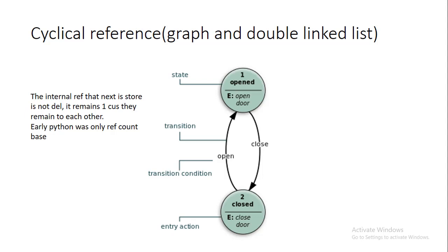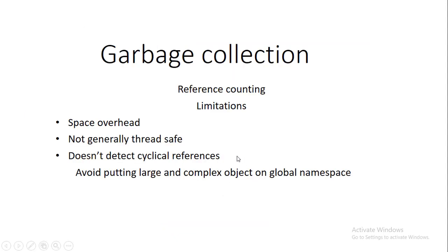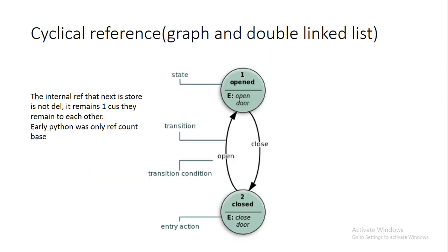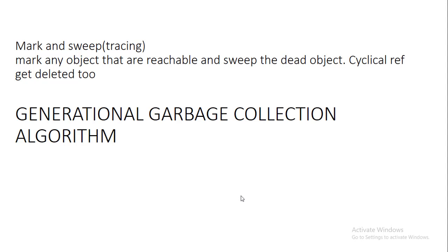Cyclical references occur when the internal references of objects are linked to each other on both sides — like two linked nodes pointing to each other. The reference count of each node will be one, so the reference counting algorithm will not delete these objects from the heap memory. To solve this, we can use the mark-and-sweep algorithm, which is a tracing algorithm that Java uses for garbage collection — it marks any reachable object and sweeps dead objects.